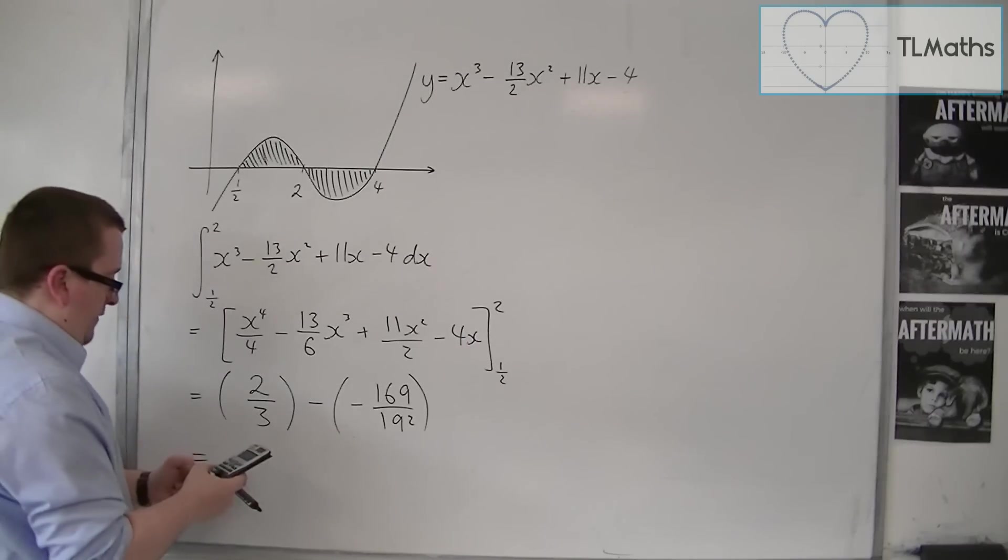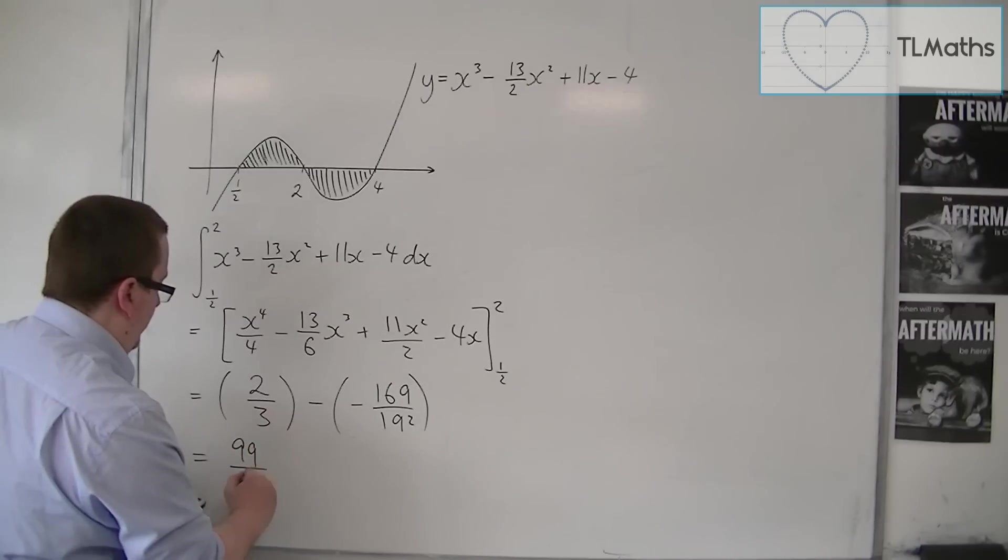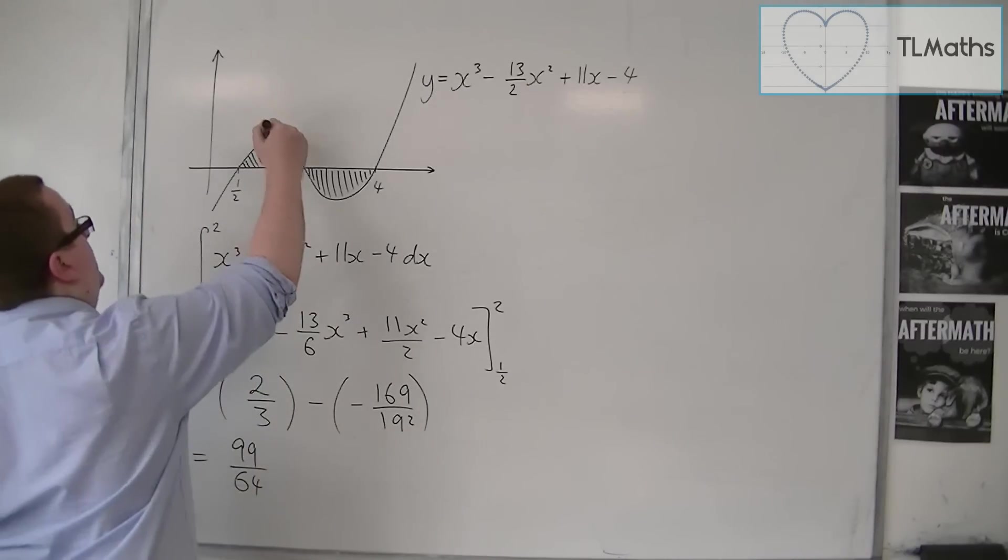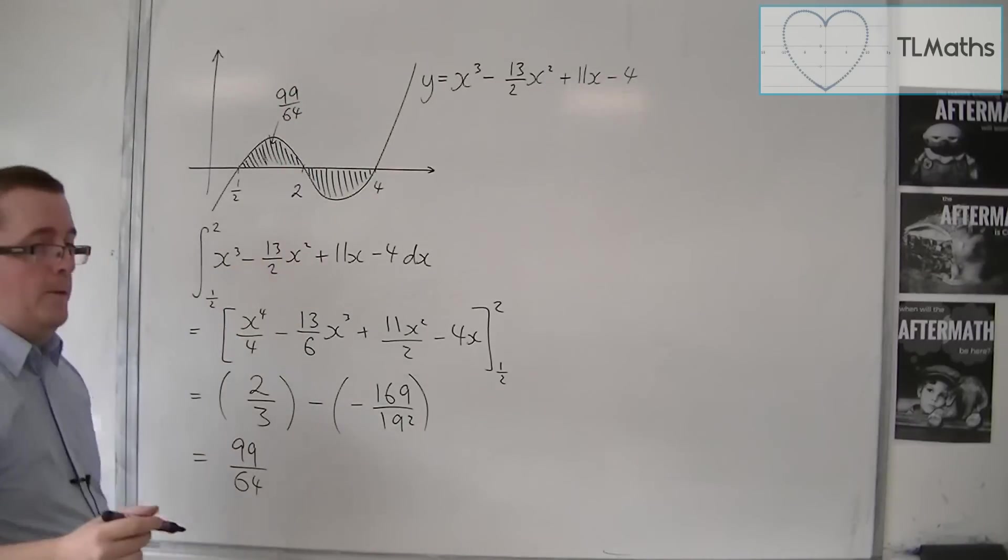So we have 2/3 take away this is 99 over 64. So that is this region here, 99 over 64.